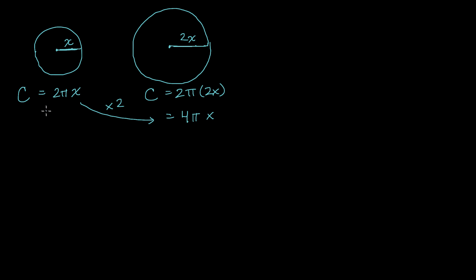Now what about the area? And I'll do area in a new color. So we already know that area is equal to πr². In this circle the radius is of length x, so it's π times x².